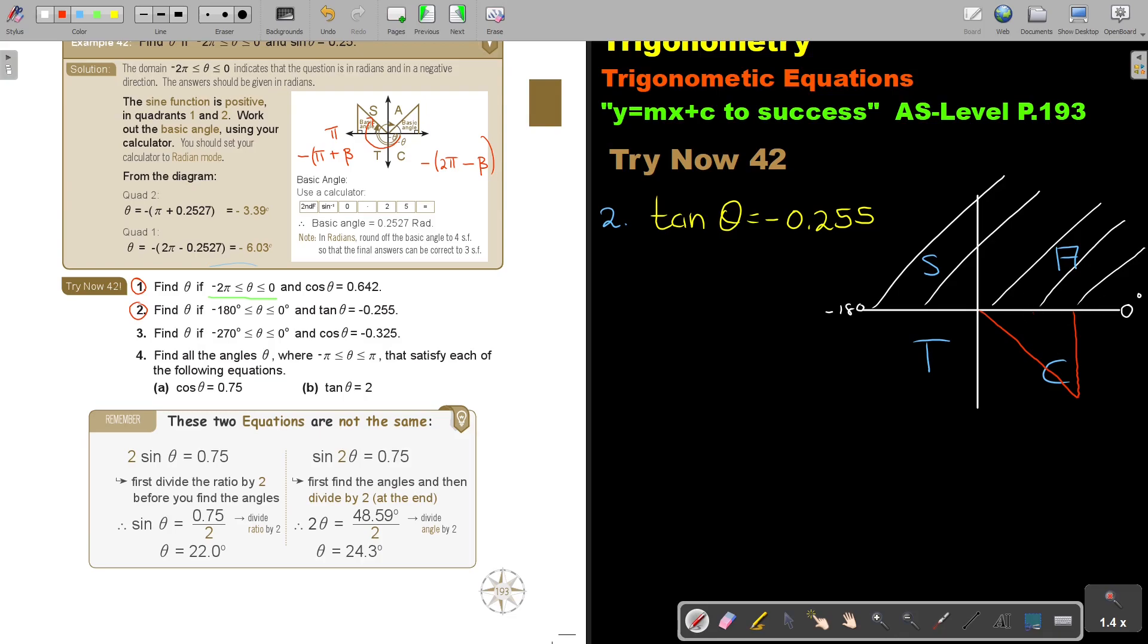So, which is going to be - remember, it's in this direction. So, first, I'm going to get my base again. Now, how do I press that? Shift, tan, or second function tan, and then, not the negative, only 0.255 equals. And what do I get? I get 14.31. Remember, make it to two decimal places so that your final answer can be correct to one decimal place. And now, it's almost like quadrant one. So, theta is just, put the negative, and it's in quadrant one, make it correct to one decimal place. So, it's negative 14.3. And that is my final answer.